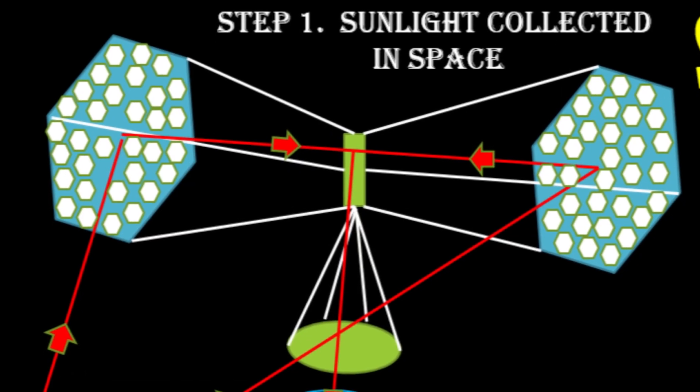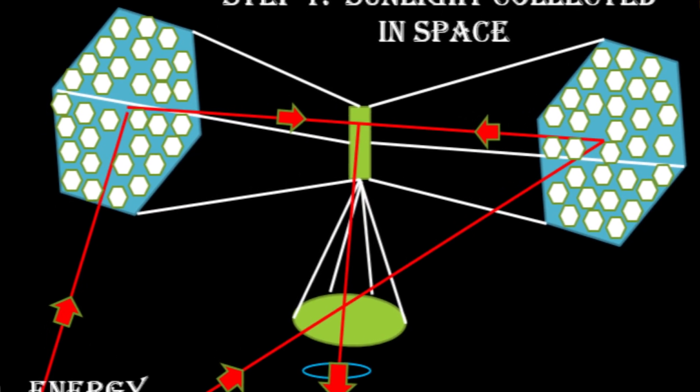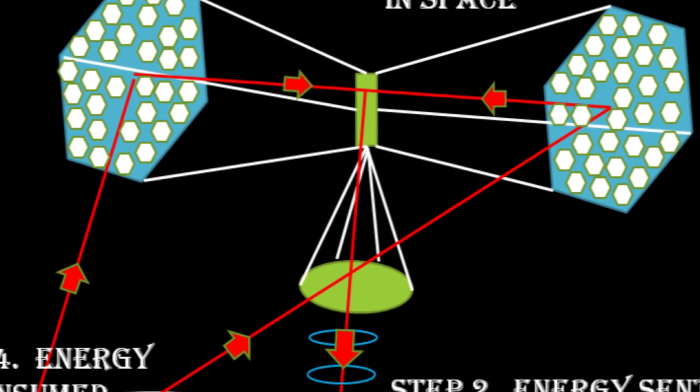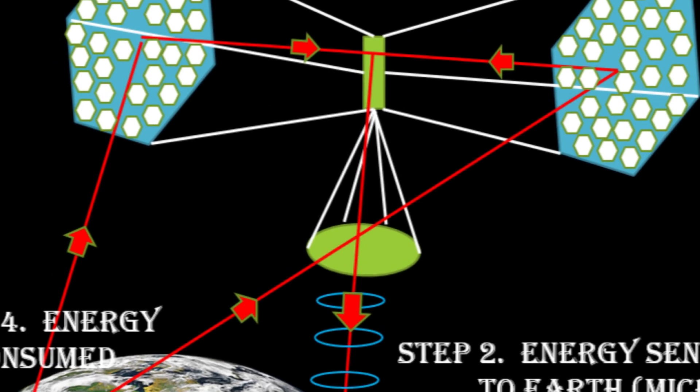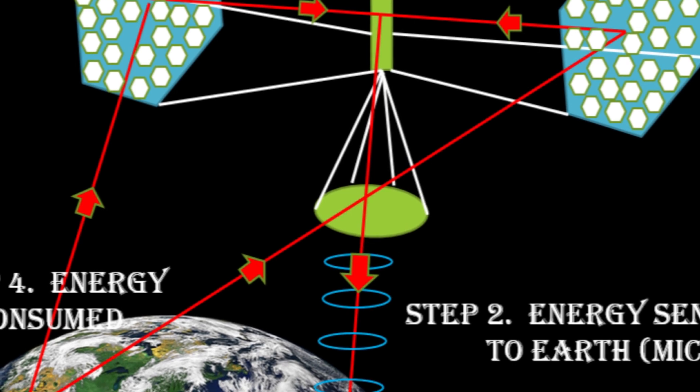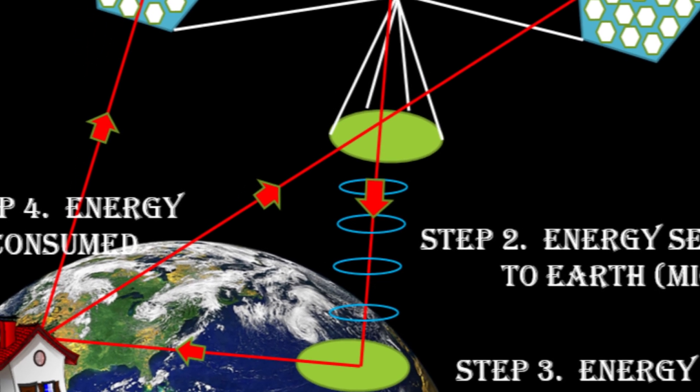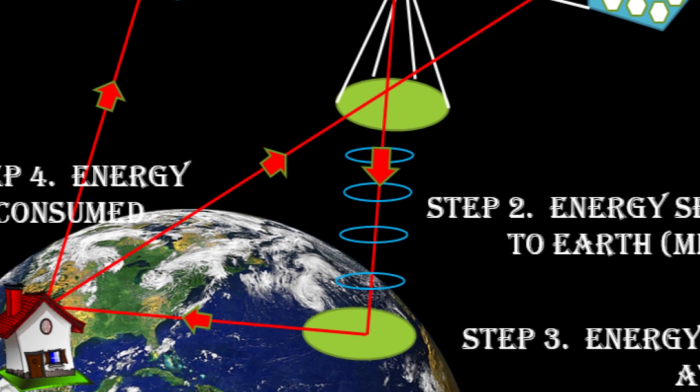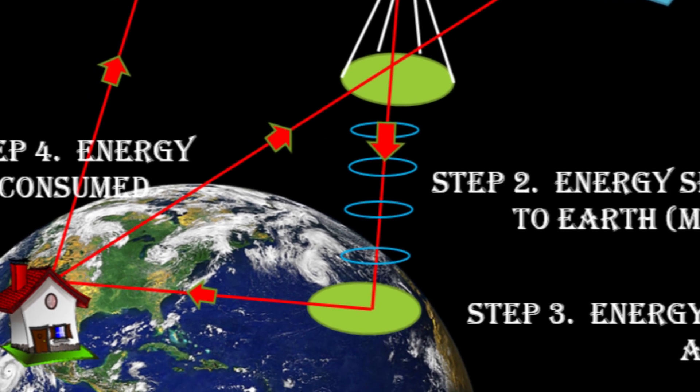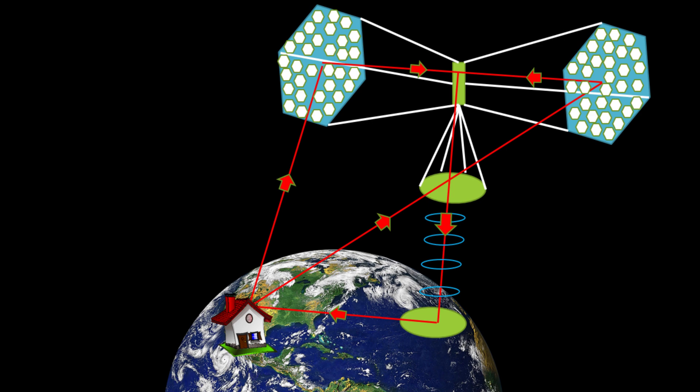The solar arrays would capture the power of the sun and convert it into microwaves. These microwaves would be beamed towards Earth, where they would be collected by antennas over a huge area and turned into electricity.